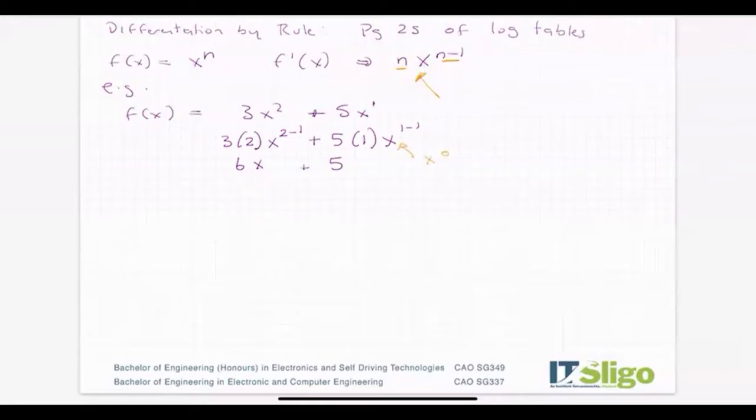Anything to the power of zero equals 1. When you get used to calculus, you tend not to write these intermediate lines for simple problems.